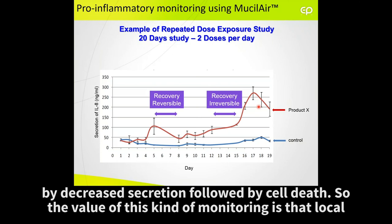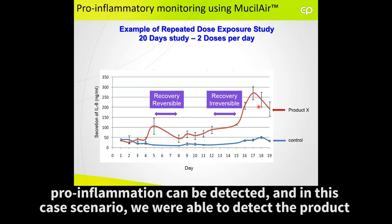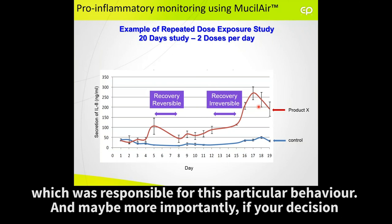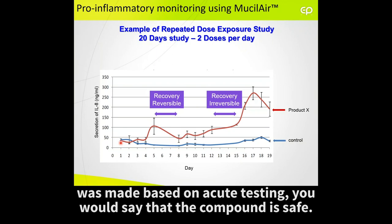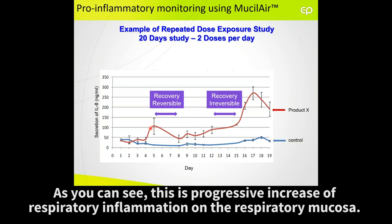So it showed the value of this kind of monitoring — that local pro-inflammation could be detected. In this case scenario, we were able to detect the product responsible for this particular behavior. And maybe more importantly, if your decision was made based on acute testing, you would say that the compound is safe. However, this is really not the case here. As you can see, there is a progressive increase of respiratory inflammation on the respiratory mucosa.